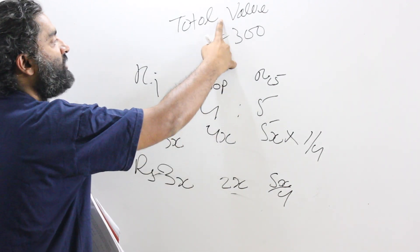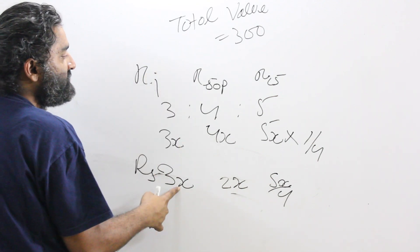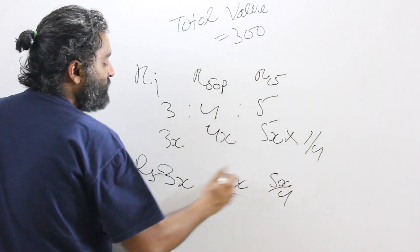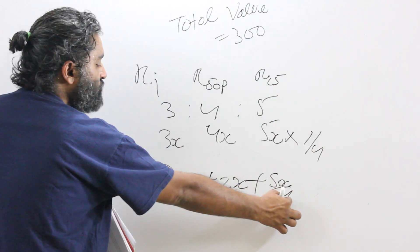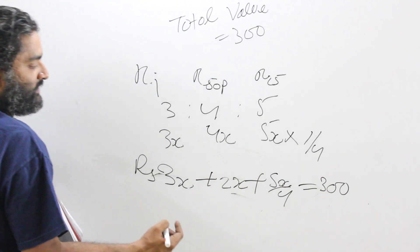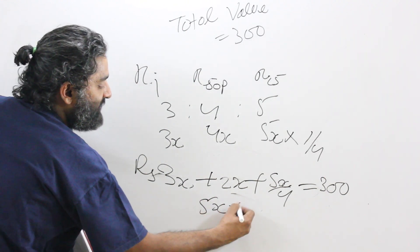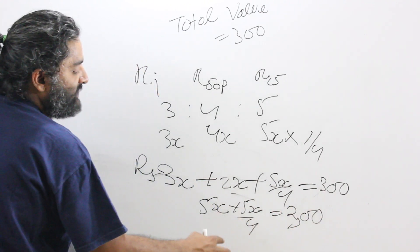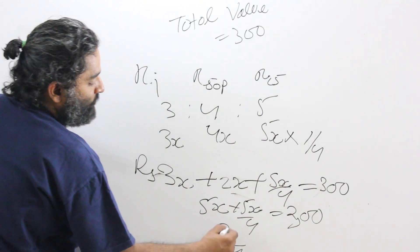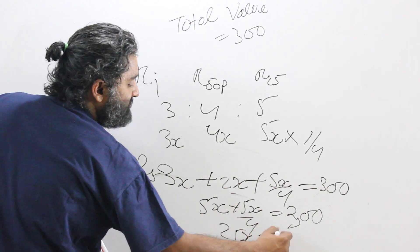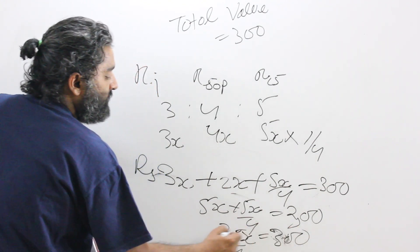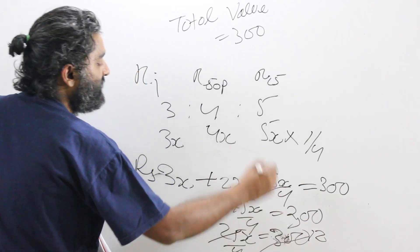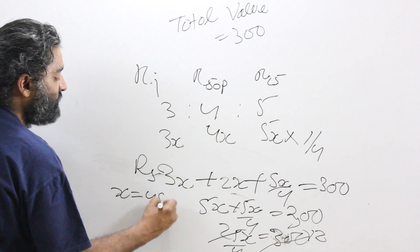Now you were given the total value. This is the value of 1 rupee coins, 3x. This is the value of 50 paisa coins which is 2x and this is the value of 25 paisa coins which is 5x by 4 and you have the sum. You start thinking in sums and you get this equals 300. This is 5x plus 5x by 4 equals 300. What will this become? 25 by 4 x. Overall, 25 by 4 x equals 300. X equals 48. The value of x is 48.